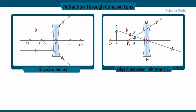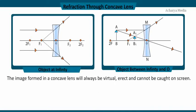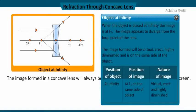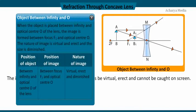Now we will look at the refraction through a concave lens. A parallel beam always diverges after refraction through a concave lens; hence, the image formed will always be virtual, erect, and cannot be caught on a screen. When the object is placed at infinity, the image is at F1, and it appears to diverge from the focal point of the lens; the image is virtual, erect, highly diminished, and is on the same side as the object. When the object is placed between infinity and the optical center O, the image is formed between focus F1 and optical center O; the image is virtual, erect, and diminished.